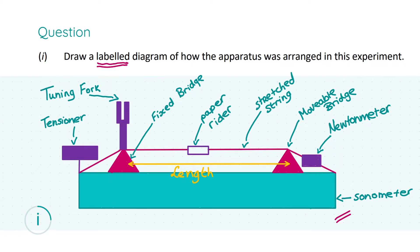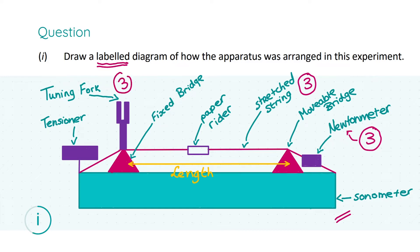For your first three marks you need to label and draw in your stretched string. For the next three marks, label and add in your Newton meter. For another three marks, your tuning fork. For the final three marks, mention a fixed bridge, the paper rider, maybe a movable bridge, a meter stick, or just the length. That gets you your final three marks — twelve in the bag.